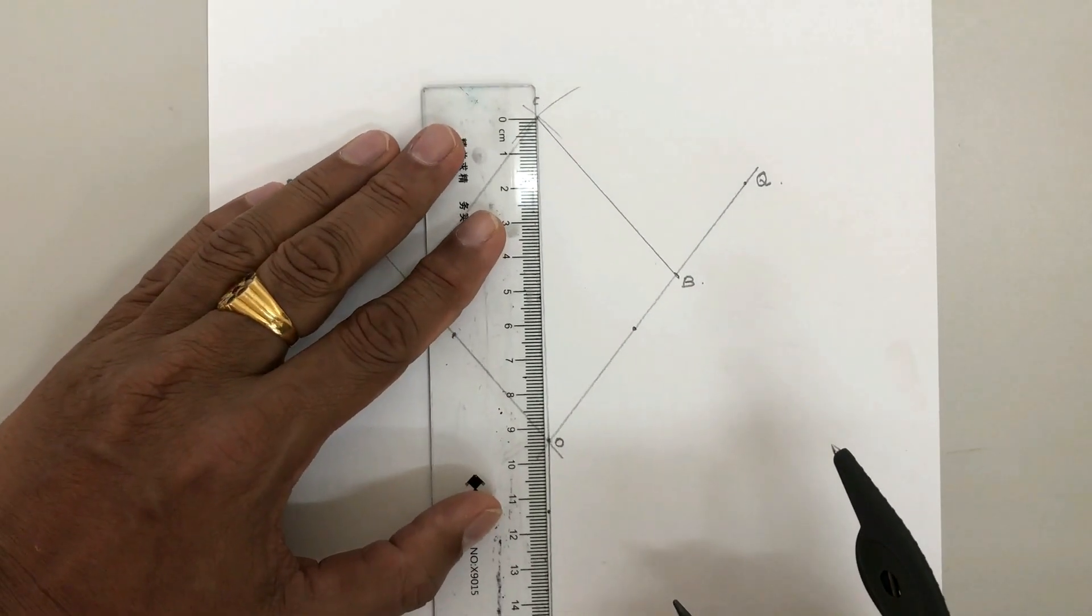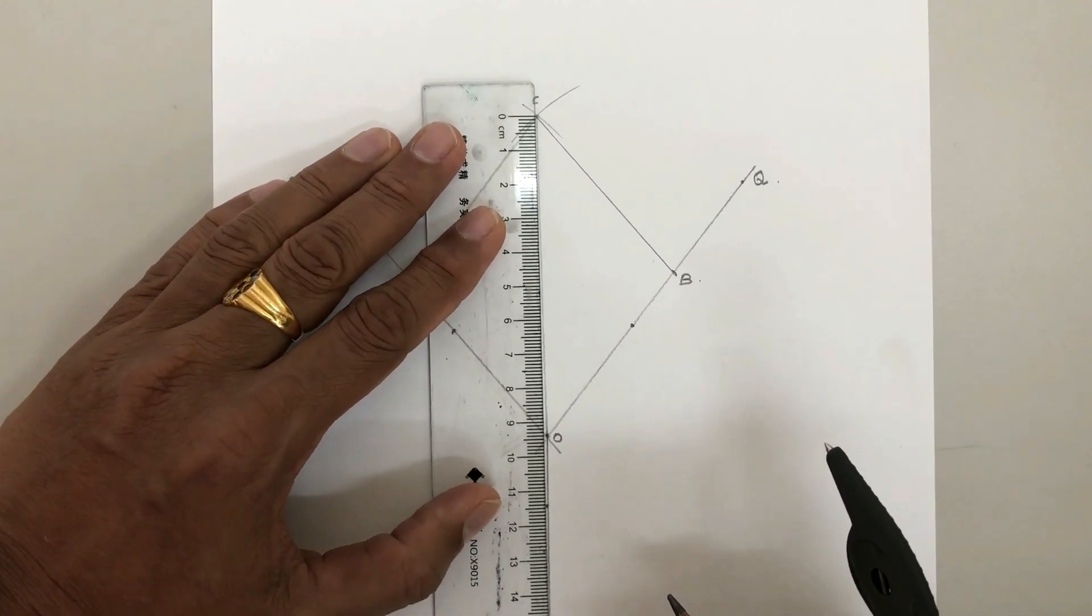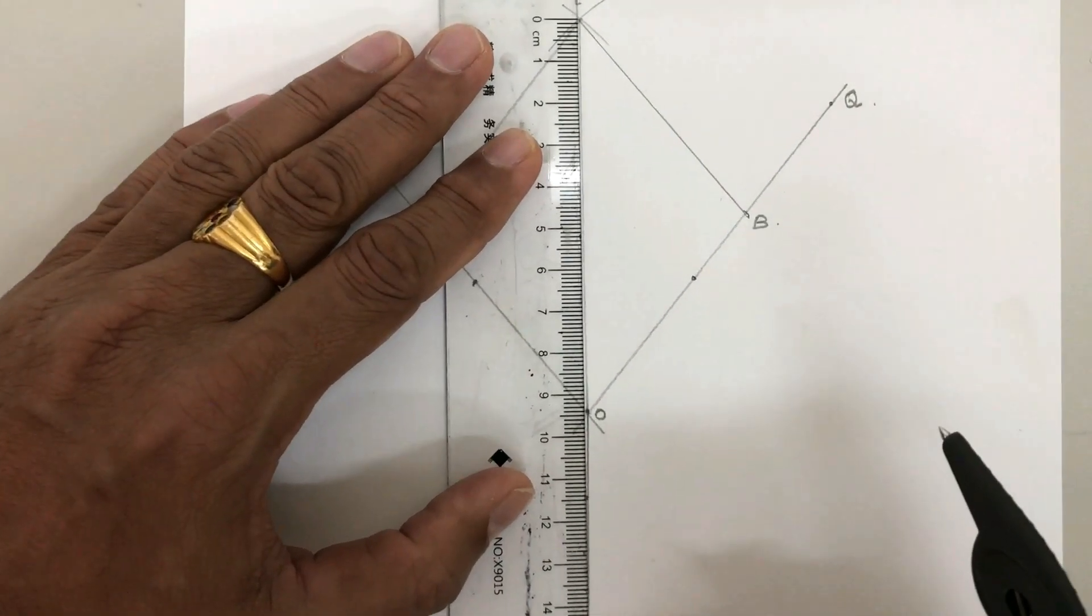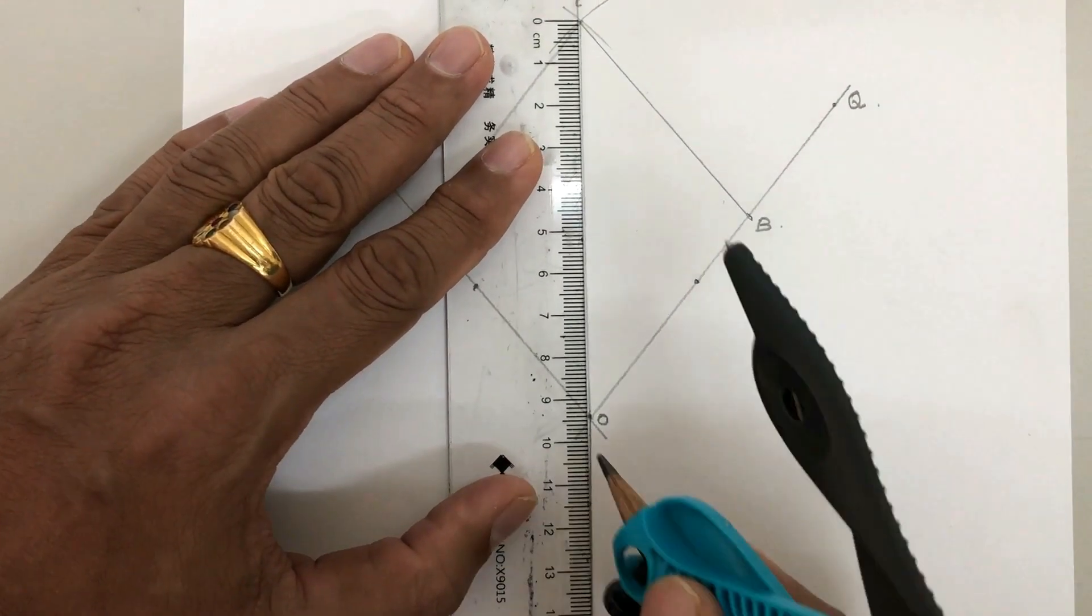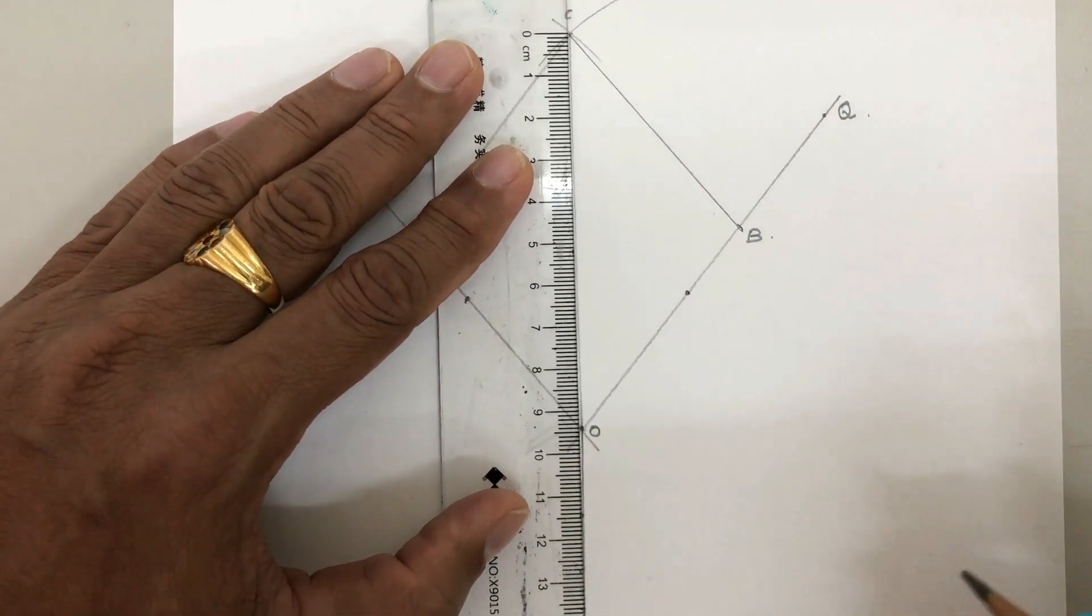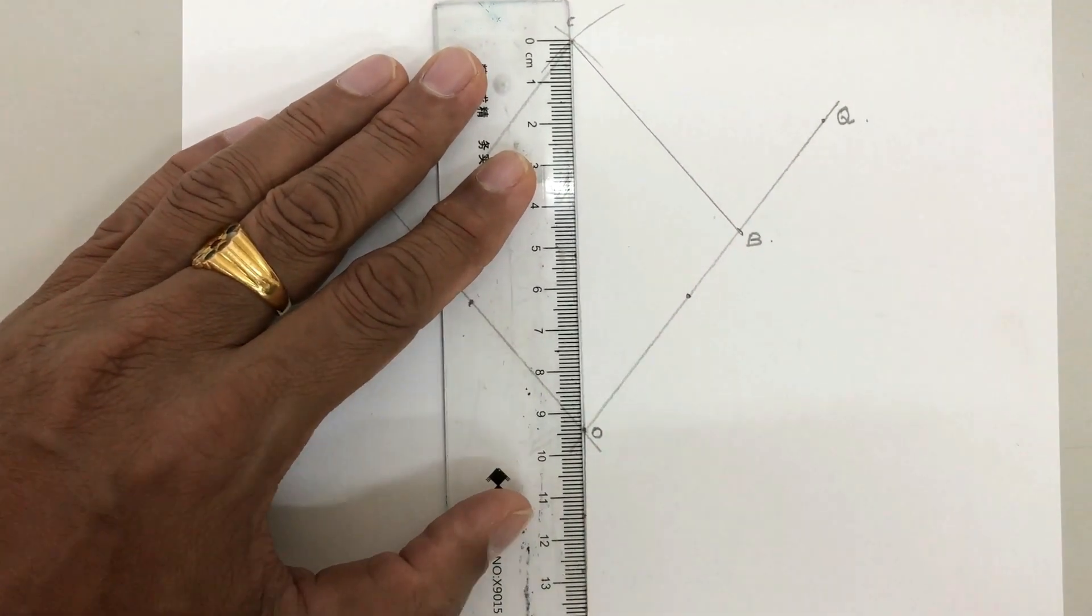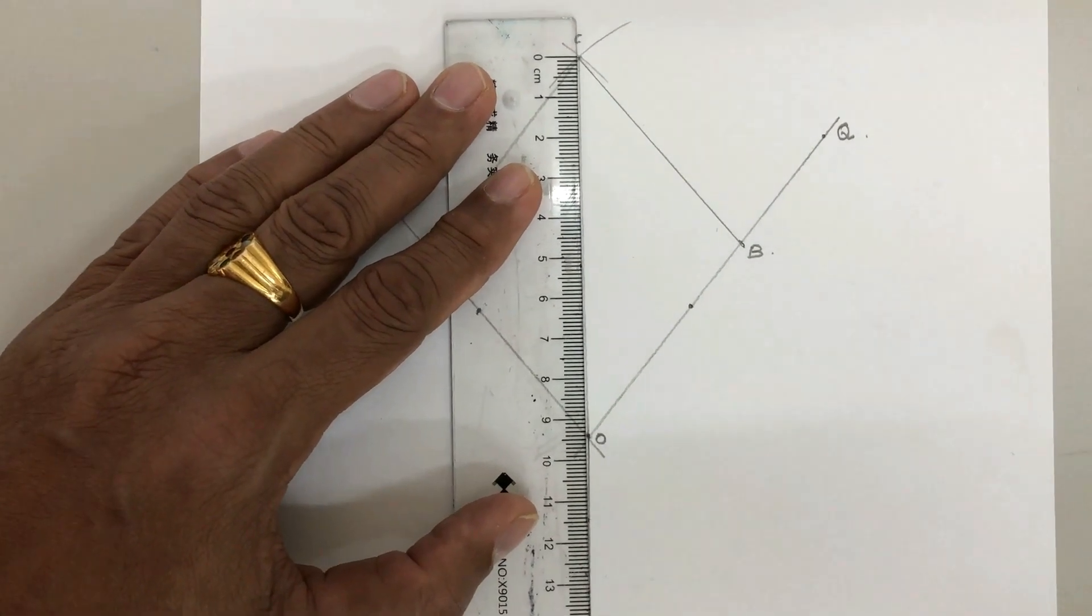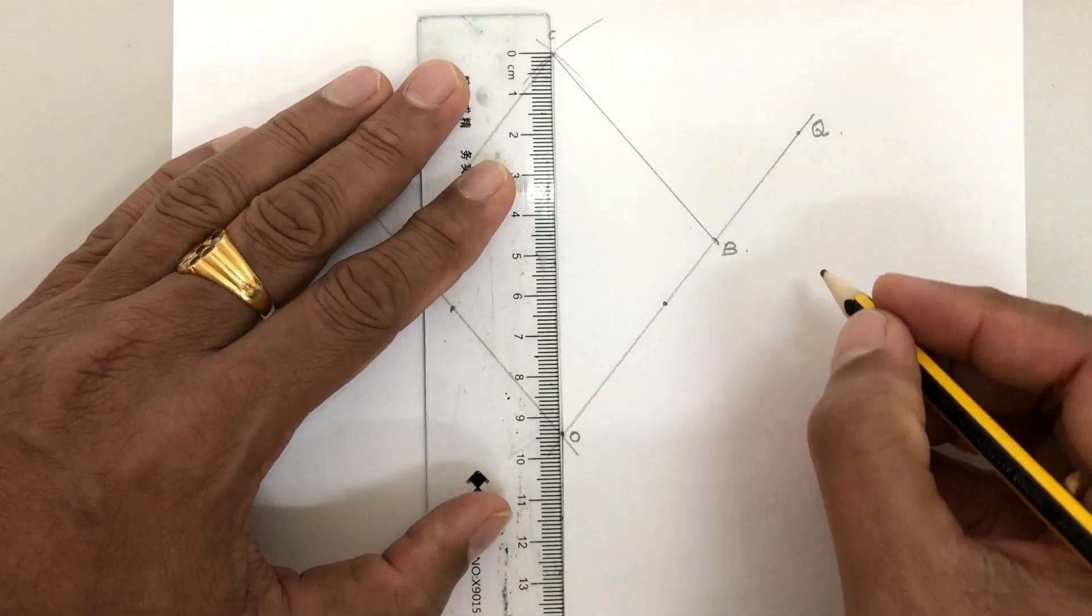Now we can draw OC and measure it. So here we can see that OC is equal to approximately 9.4 centimeters.